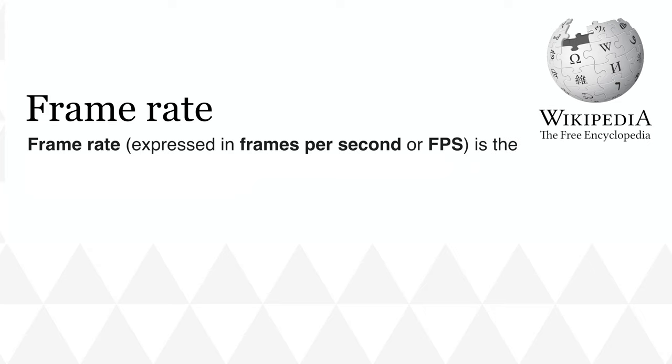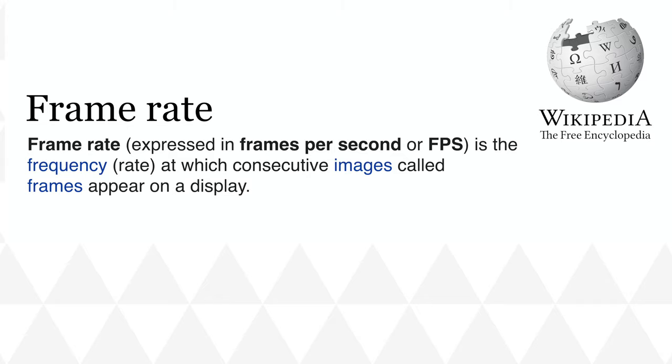Wikipedia defines framerate as the frequency in which consecutive images called frames appear on a display. Today, refresh rate and framerate are used interchangeably due to the nature of modern LCD panels. But for a majority of gaming history, CRT displays were used, where the terms are not the same. Refresh rate was how often the scan lines were refreshed on the display, whereas framerate described how often the picture itself updated. The ideal situation when playing games was for the framerate to match or exceed the refresh rate of the display.